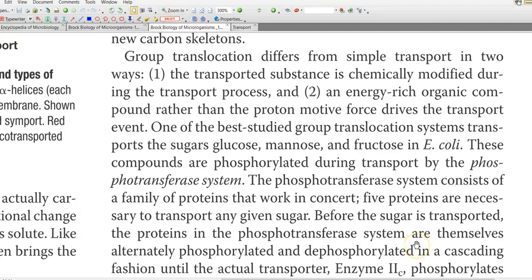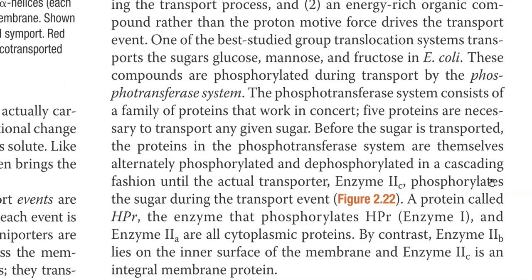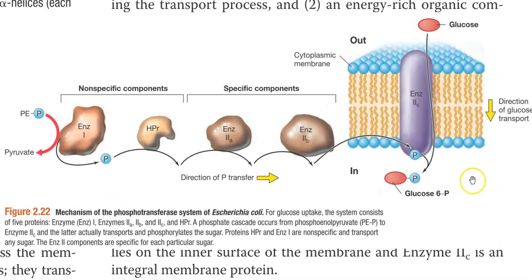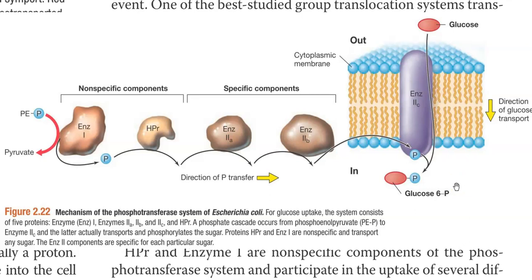The best-studied group translocation systems are present in E. coli, including the glucose, mannose, and fructose transport systems. These sugars are phosphorylated during transport by the phosphotransferase system. The phosphotransferase system consists of a family of proteins all working in concert. Five proteins are necessary to transport any sugar through this phosphotransferase system. Before the sugar is transported, the proteins in the phosphotransferase system are themselves alternately phosphorylated and dephosphorylated in a cascading fashion until the actual transporter, that is enzyme 2C, which phosphorylates the sugar during the transport event.